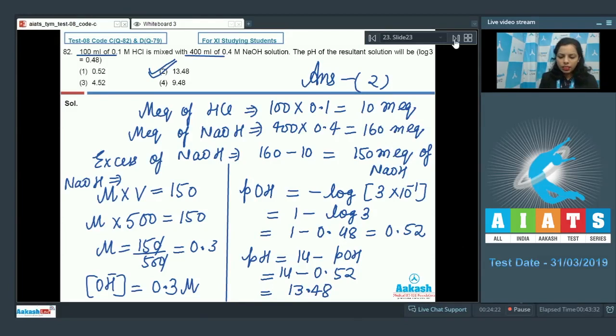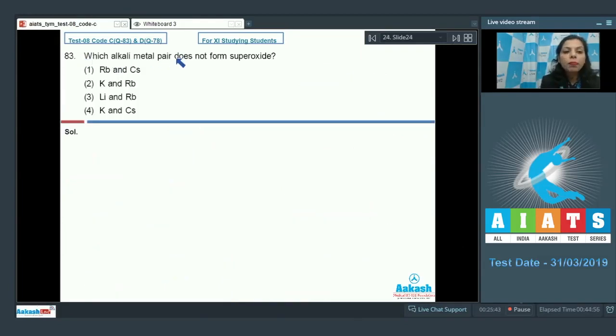After that, question number 83: Which alkali metal pair does not form superoxide? If we talk about alkali metal, large size alkali metals form superoxide like rubidium, like cesium, even potassium also. But if we talk about sodium and lithium, they are not forming superoxide. And on that basis, your option 3 becomes correct answer for this question.